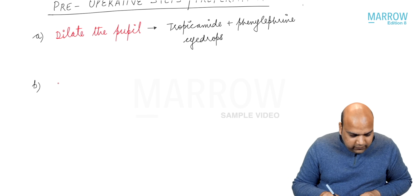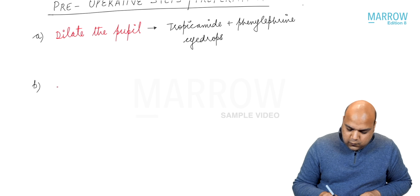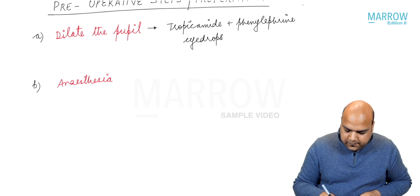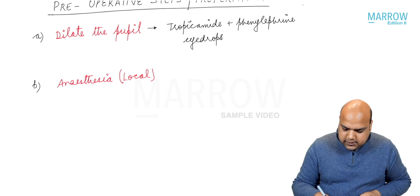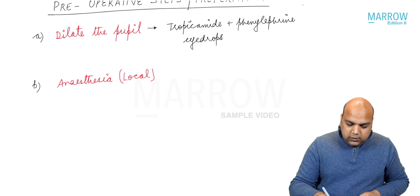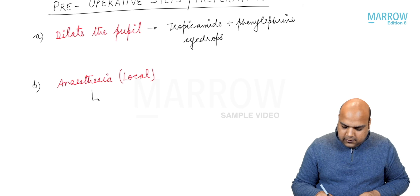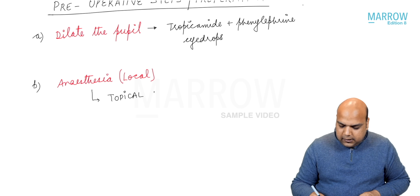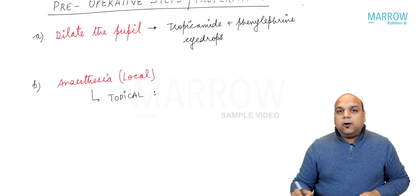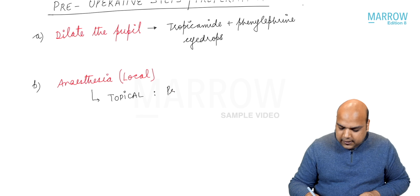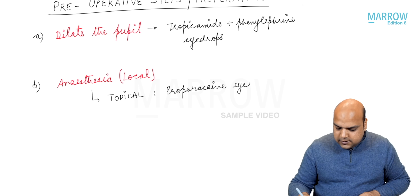Secondly, you want to have an anesthetized eye. Along with dilatation of the pupil, you want to give anesthesia. It has to be local anesthesia — we are not interested in general anesthesia. This local anesthesia is mostly given topically, meaning eye drops. Proparacaine eye drops are given.